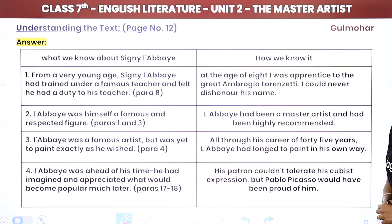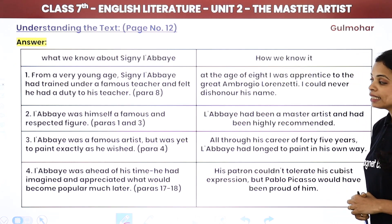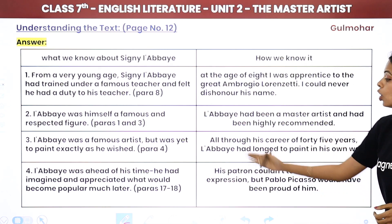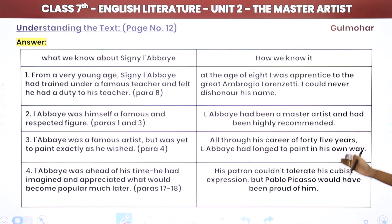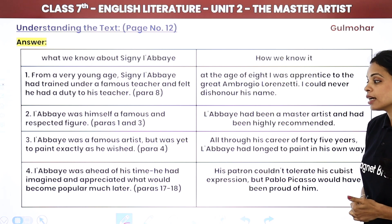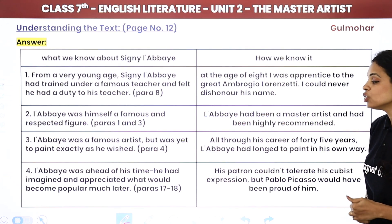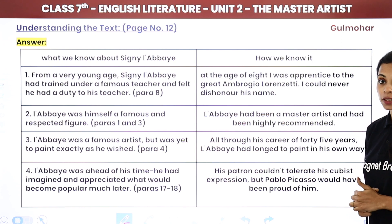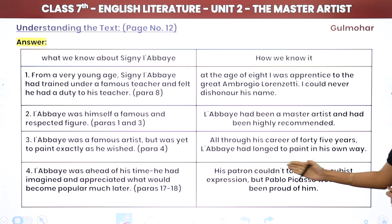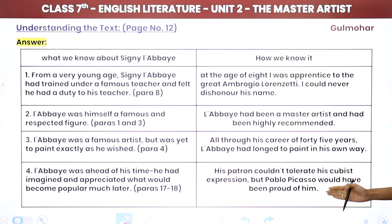Libai was a famous artist but was yet to paint exactly as he wished. All through his career of 45 years, Libai had longed to paint in his own way. The last point is that Libai was ahead of his time — he had imagined and appreciated what would become popular much later. He was always ahead of his time, so his patron couldn't tolerate his cubist expression, but Pablo Picasso would have been proud of him.